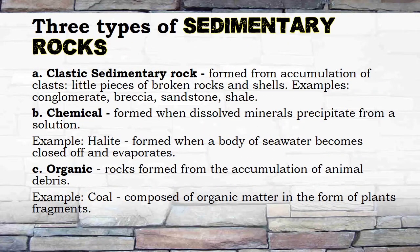Three types of sedimentary rocks. A. Clastic sedimentary rock: formed from accumulation of clasts — little pieces of broken rocks and shells. Examples: conglomerate, breccia, sandstone, shale. B. Chemical: formed when dissolved minerals precipitate from a solution. Example: halite, formed when a body of seawater becomes closed off and evaporates. C. Organic: rocks formed from the accumulation of animal debris. Example: coal, composed of organic matter in the form of plant fragments.